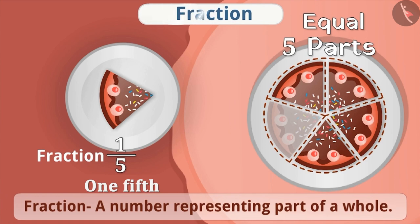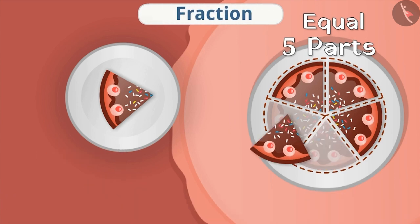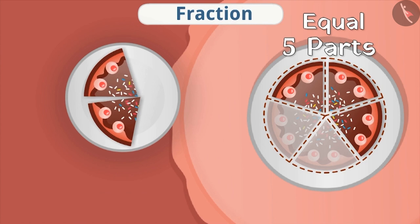If we keep one more piece on the plate, then the number of pieces becomes two. Since there are two pieces out of five, these two parts form the fraction two-fifths of the whole cake.